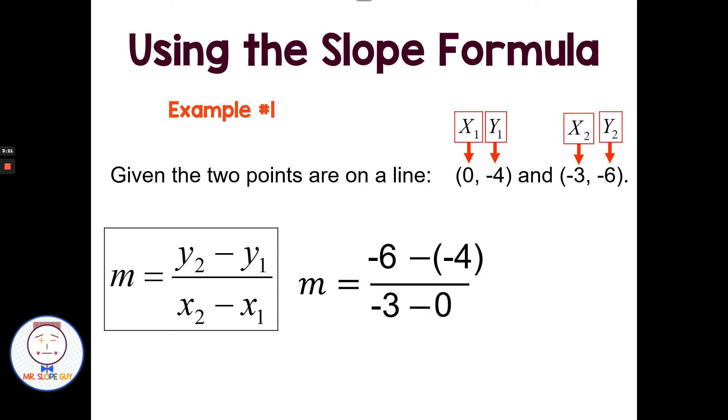Now it comes time for our integer rules. Remember with integer rules, subtracting is the same as adding the opposite. So -6 minus -4 would be the same as -6 plus 4. And -6 plus 4 would give us -2. -3 minus 0 is -3. And then we can just reduce the fraction because I know a negative divided by negative is positive. So we just reduce this to 2/3.